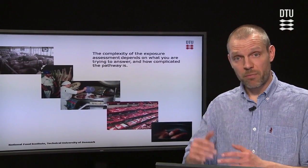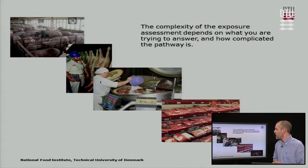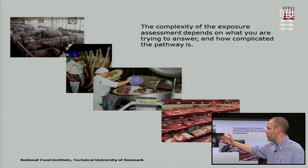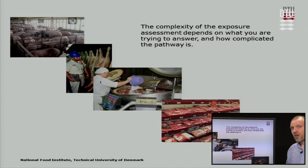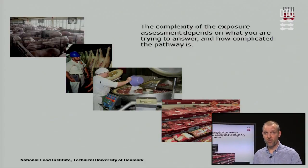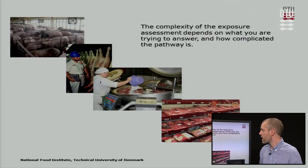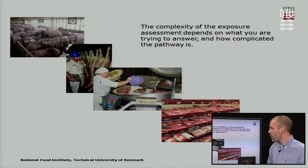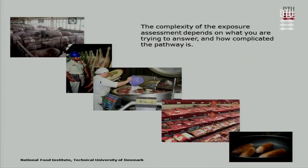The complexity of the exposure assessment and the pathway you build depends very much on what you are trying to answer and how complicated the pathway is. You can do it very simply, saying there is a certain increase or decrease in concentration, but you can also develop very complicated models. For instance, the question you are working with might be: what can we do at the slaughter line to reduce concentration, what does it mean to change the temperature, or what does it mean to change the cleaning procedure? Then you need to build very detailed mechanistic models at different steps. But the most important thing is to make the model at a level that fits for purpose — don't overdo your modeling. Try to answer the questions you have, not more.